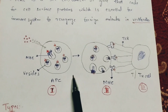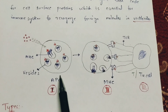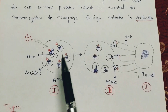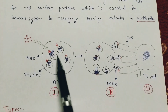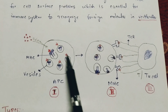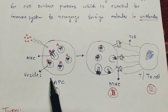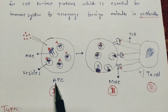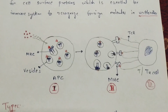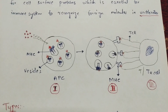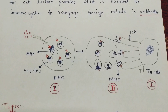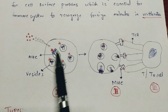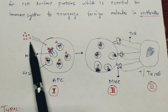Now let us understand what MHC molecules are and where they arise from. Normally, this is the APC — antigen presenting cell. Examples of antigen presenting cells include macrophages, dendritic cells, and leukocytes, which are nothing but white blood cells.